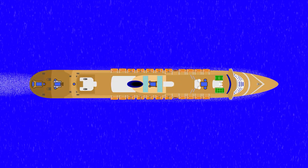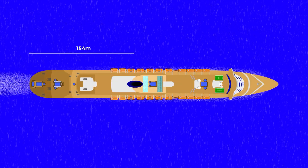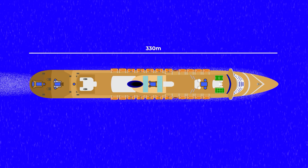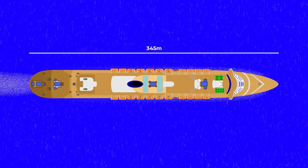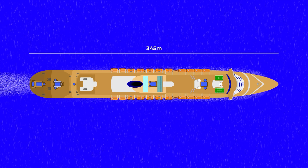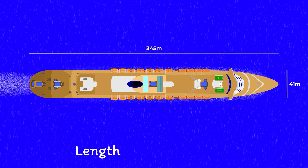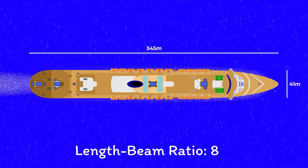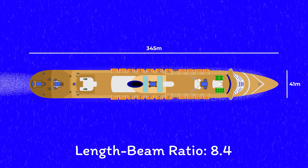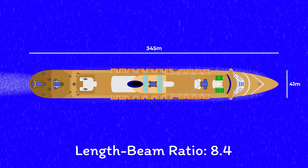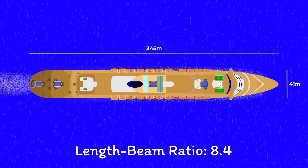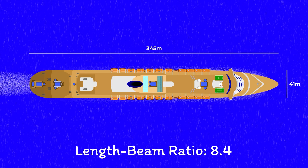Queen Mary 2, for example, has a length of 345 meters and a beam at the waterline of 41 meters, giving a length-to-beam ratio of 8.4 — quite fitting for a ship designed to run for thousands of miles in a straight line.